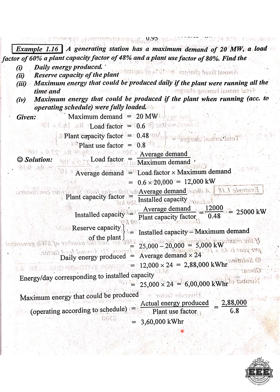So to summarize: the actual energy produced, the reserve capacity of the plant is 5,000 kilowatts. The maximum energy that could be produced daily if the plant is running all the time has also been calculated. All answers have been found. Thanks for watching.